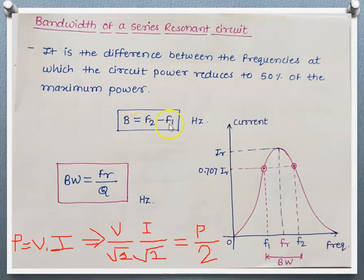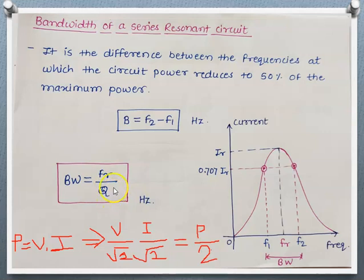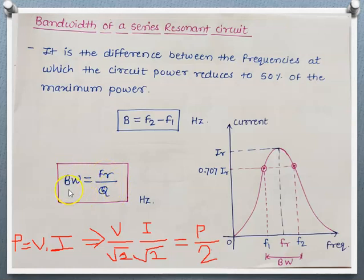There is a relation between bandwidth and quality factor: bandwidth equals f_R divided by Q, where f_R is the resonant frequency and Q is the quality factor. This means if the Q factor increases, the bandwidth will decrease, and if the Q factor decreases, the bandwidth will increase. Q factor and bandwidth are inversely proportional to each other.